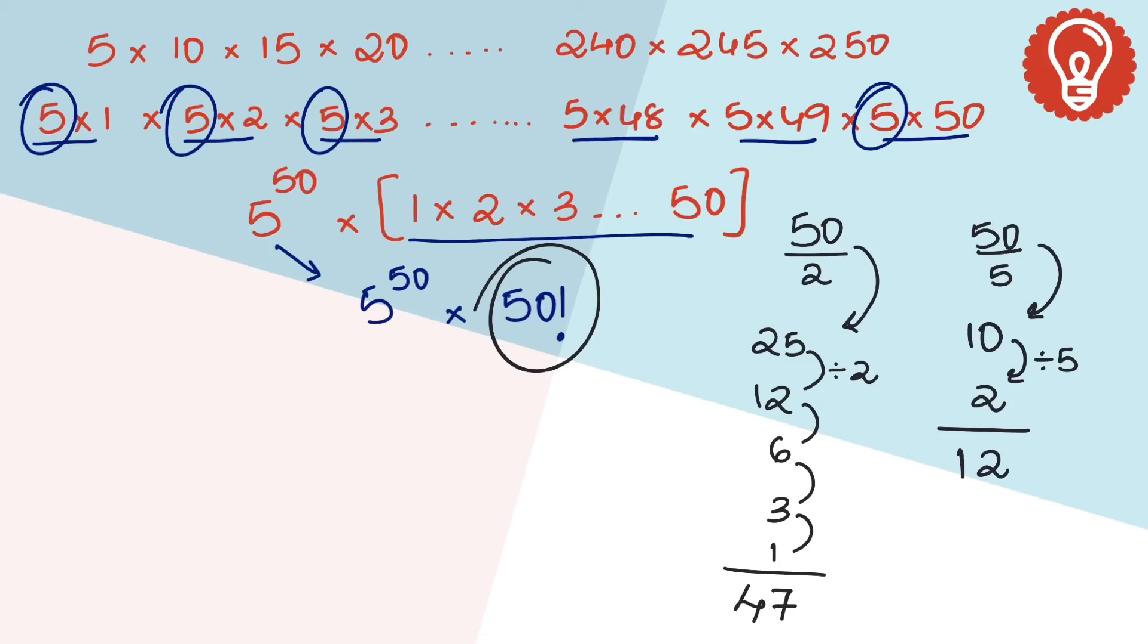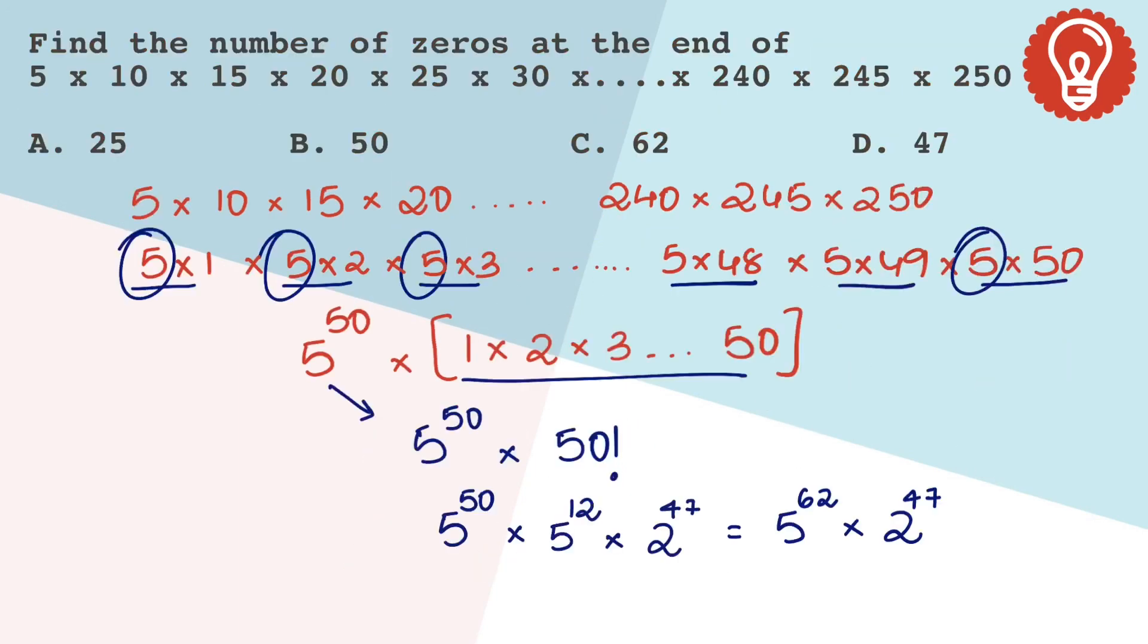Therefore in 50 factorial we know the number of 2s are 47 and the number of 5s are 12. And let's keep this 5^50 as it is. Therefore 2s are 47 in number and 5s are 62 in number. And we know the smallest power is the answer. Therefore there are 47 zeros at the end of this product.